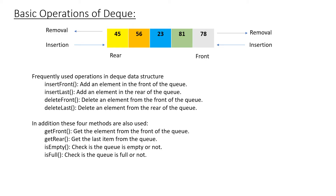Let's see the basic operations performed on a Deque. There are mostly four operations: insert at the front, which adds an element at the front; insert at last, which adds an element at the rear; delete front, which removes an element from the front; and delete last, which deletes an element from the rear.